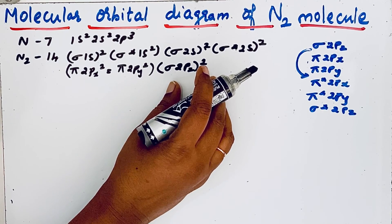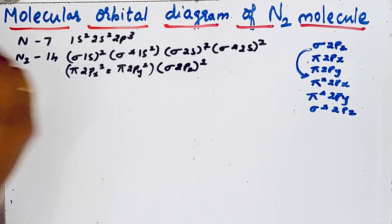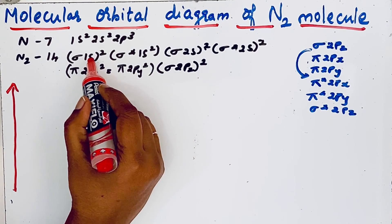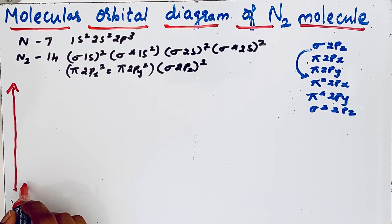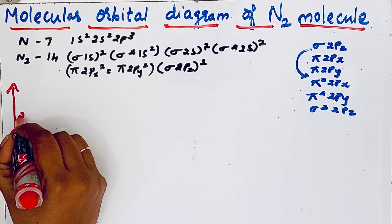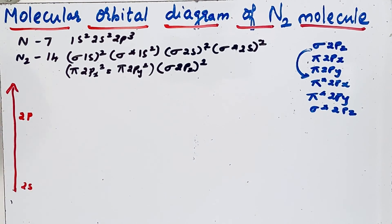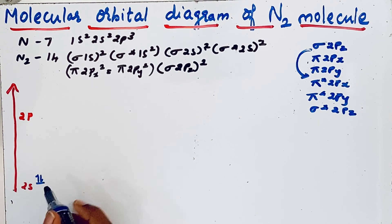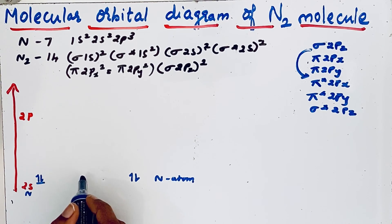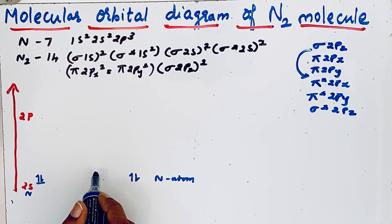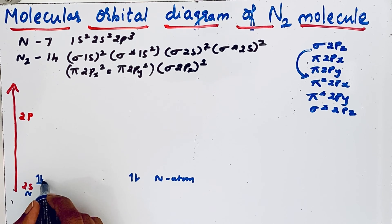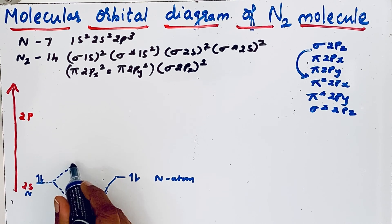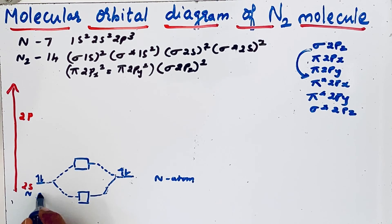Now let us draw the orbital diagram of the nitrogen molecule. We are not going to show the 1s orbital; we start from 2s. For the 2s orbital, each nitrogen atom has two electrons. When atomic orbitals combine there is the possibility of bonding molecular orbitals and high-energy anti-bonding molecular orbitals.